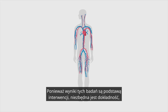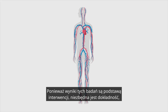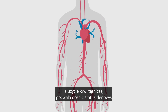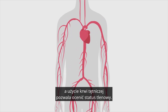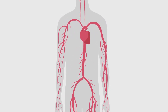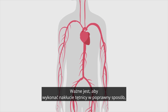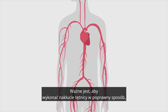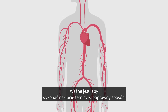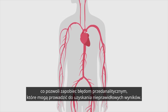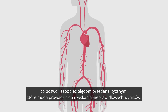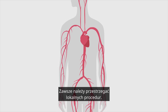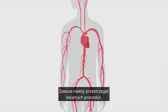Since these findings guide your intervention, accuracy is essential, and using arterial blood allows you to assess oxygen status. It is important to perform the arterial puncture in the correct way in order to prevent pre-analytical errors that can lead to incorrect results. Be sure to always follow your local procedures.